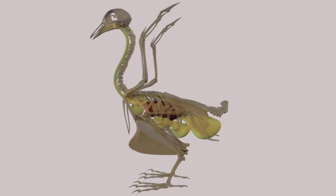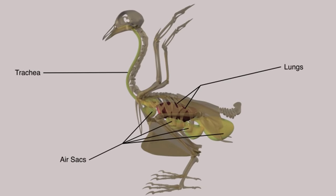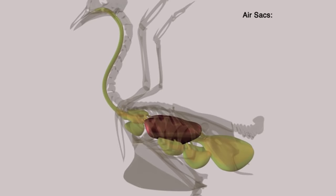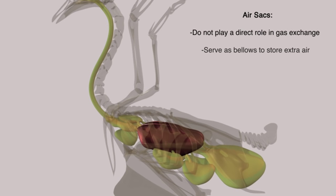The avian respiratory system is composed of the trachea, relatively small lungs, and usually nine large air sacs. These nine air sacs are extremely thin-walled and do not play a direct role in gas exchange. Instead, they serve as bellows to bring air into the bird and store it until expiration.